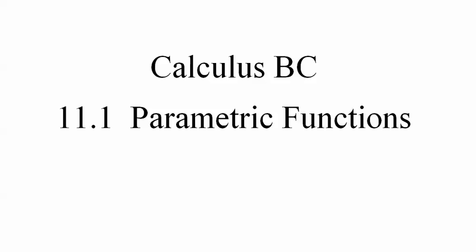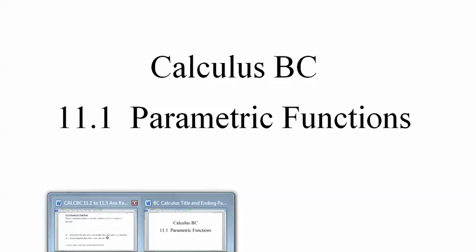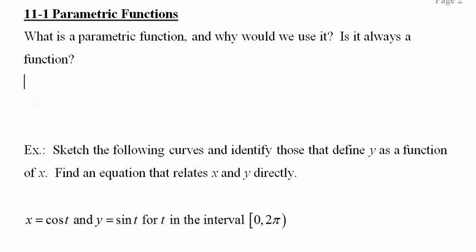BC calculus lesson 11.1: parametric functions. So what's parametric? A parametric function means we're defining y and x in terms of t, something simple like that. Why would we do it? Well, if I ask you to describe the motion of something, you can give me a path like y equals negative x squared, but how long does it take to do that? We have to introduce a third variable. This is a way to do it. That is the only reason we use it.